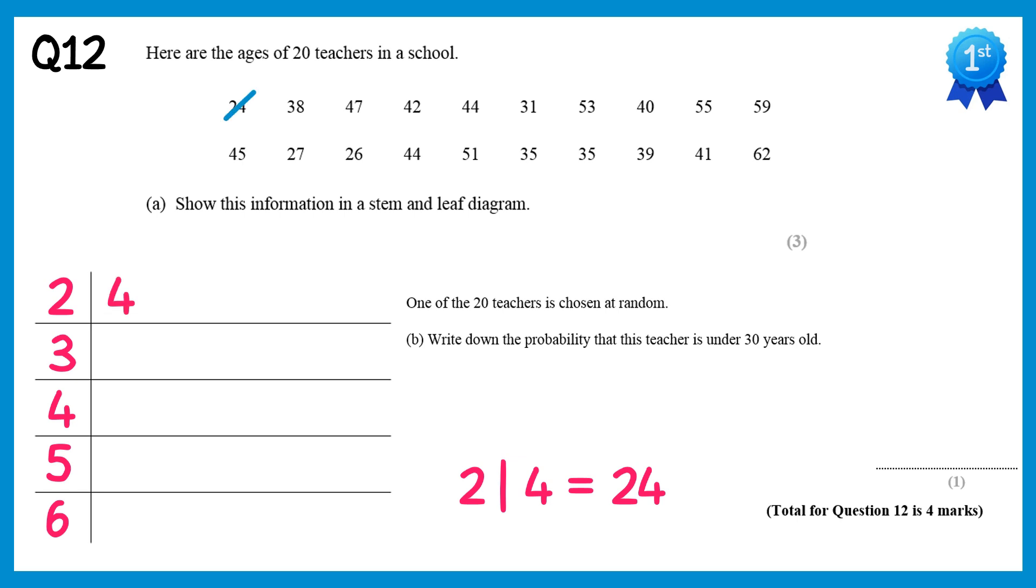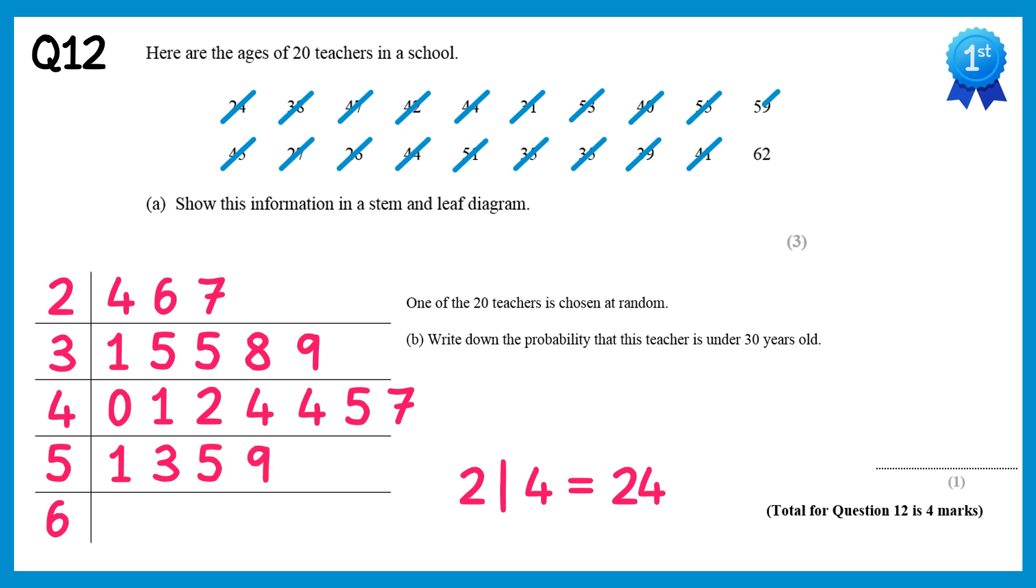So the first number is 24, then we have 26, then 27, 31, 35, 35 again, 40, 41, 42, 44, 44, 45, 47, 51, 53, 55, 59, and finally 62.